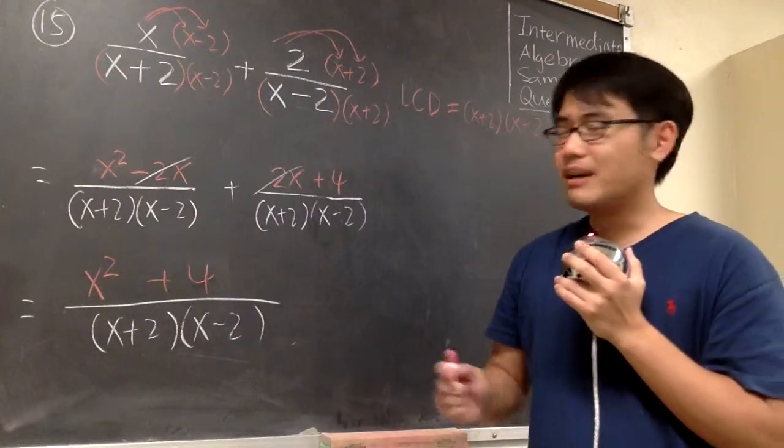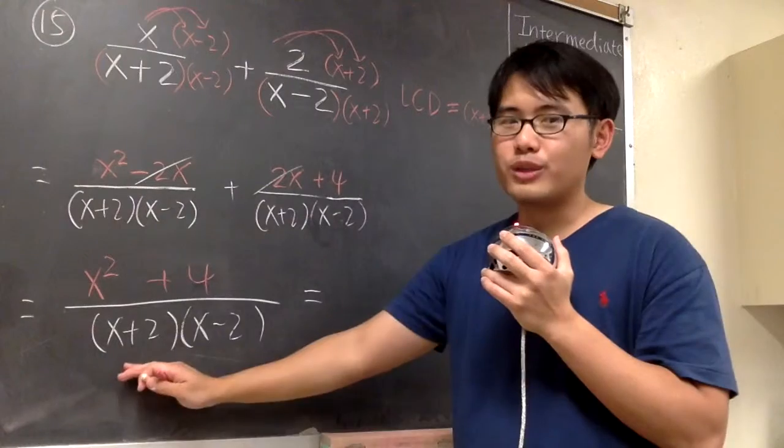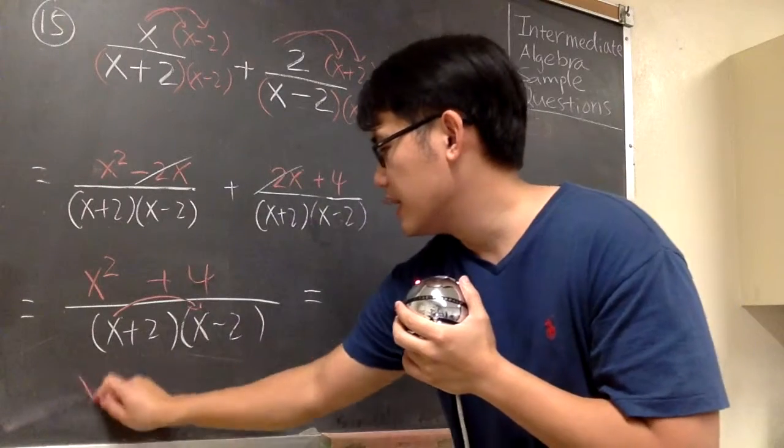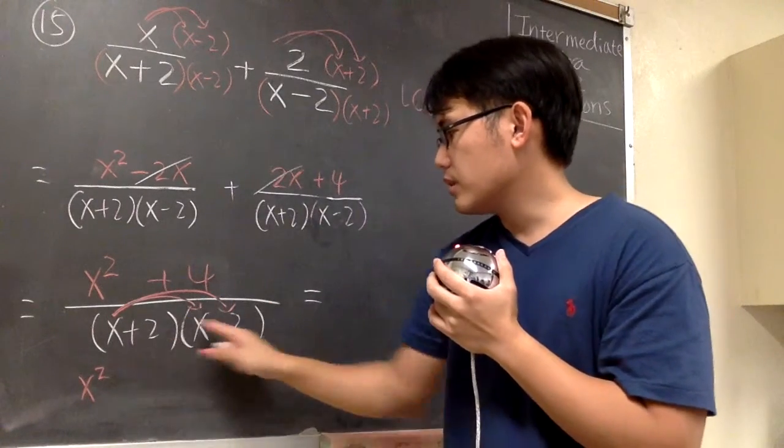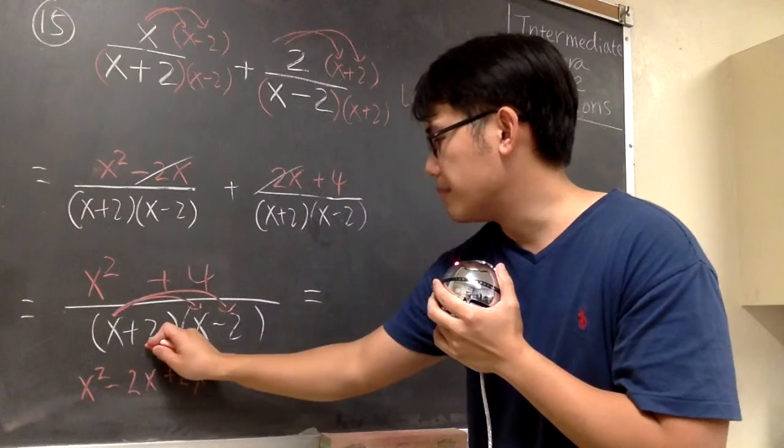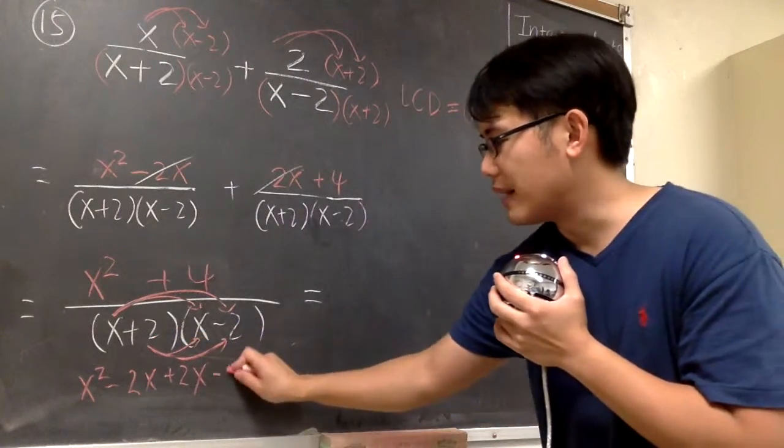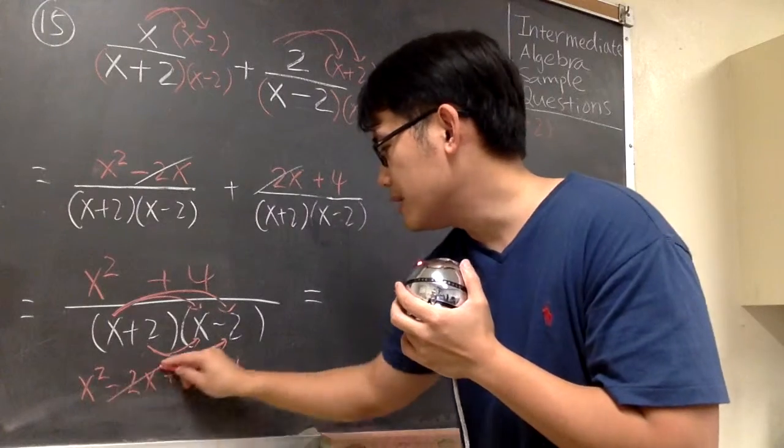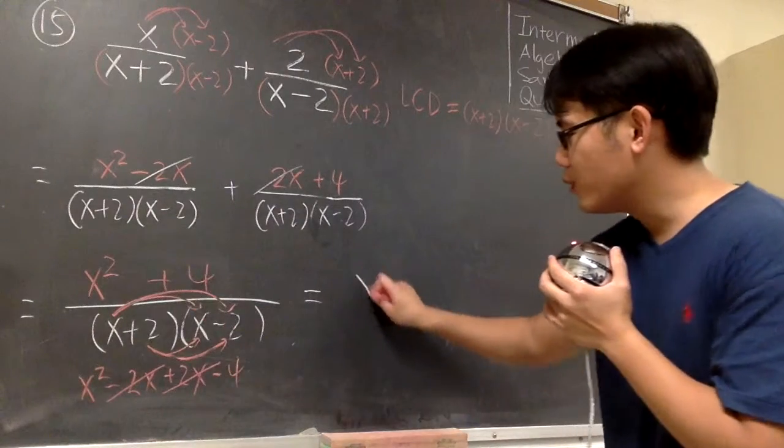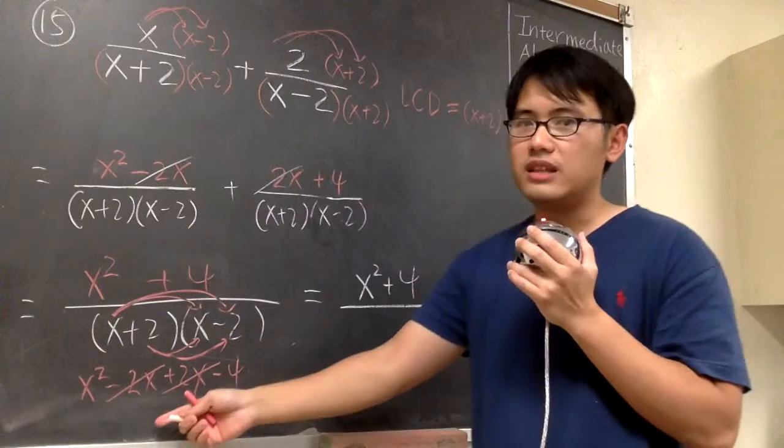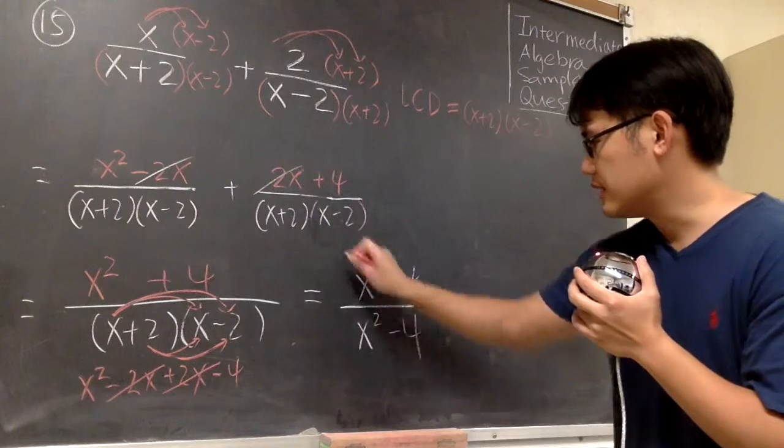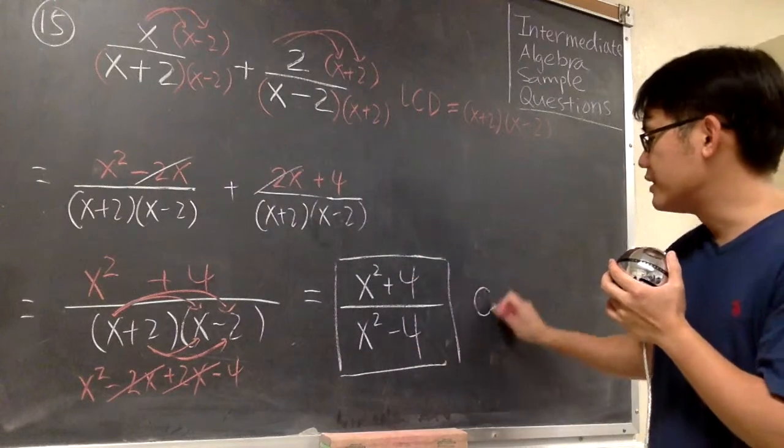However, this is not one of the answer choices, because what it is, they just multiply out the denominator. That's all. So we'll do that. x times x will give us x squared, x times negative 2, that's minus 2x, and then 2 times x, that's plus 2x, and then 2 times negative 2, that's minus 4. And as we can see, the minus 2x plus 2x, they cancel. So at the end, on the numerator, we have x squared plus 4 over the denominator is x squared minus 4. So this is the final result that they have in answer choice C.